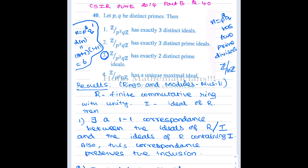In any ring, every maximal ideal is a prime ideal, but every prime ideal need not be a maximal ideal. For example, in the ring of integers, the ideal {0} is a prime ideal but it is not a maximal ideal, because 2Z contains {0}, so {0} is not maximal.